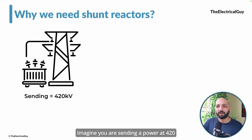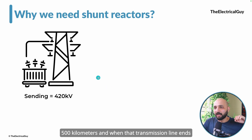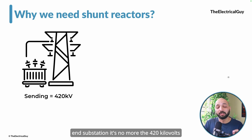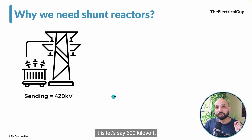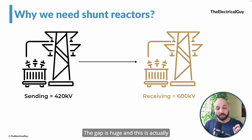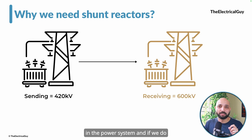Imagine you are sending power at 420 kV over a very long distance, let's say 500 km. When that transmission line ends and the voltage is received at the receiving end substation, it's no more 420 kV — it is let's say 600 kV. The gap is huge and this actually happens; this is the true effect that happens in the power system.